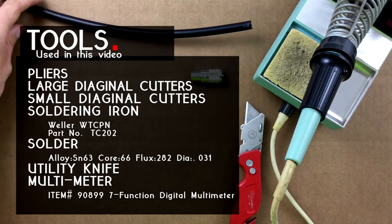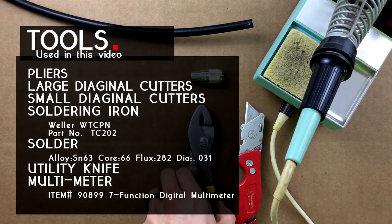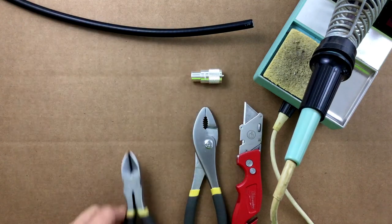This coax has a single braided shield, foil covered dielectric, and a solid center conductor, making it a budget-friendly low loss option.